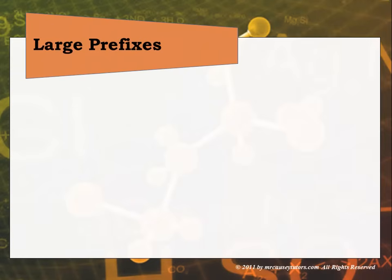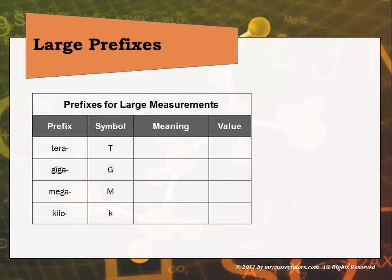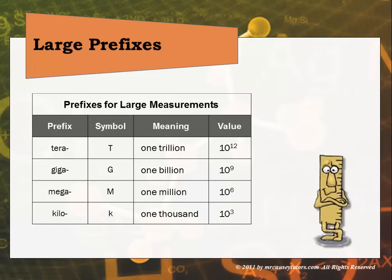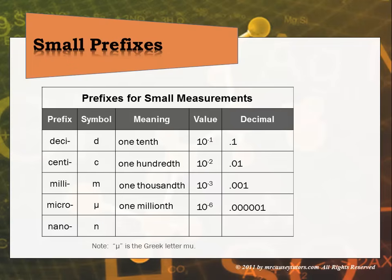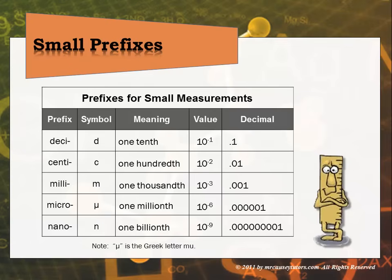A really cool thing about the metric system is that it is based on tens, and there are a set of prefixes that help us understand the units. The large prefixes are: tera (one trillion), giga (one billion), mega (one million), and kilo — the most important one for us. The small prefixes are: deci (one tenth), centi (one hundredth), milli (one thousandth), micro (one millionth), and nano (one billionth). Since 'm' is already used for milli, micro uses the Greek letter mu in its abbreviation — be sure to note that difference. There are also decimal and fractional equivalents for each of the small prefixes, and the two most important will be centi and milli.